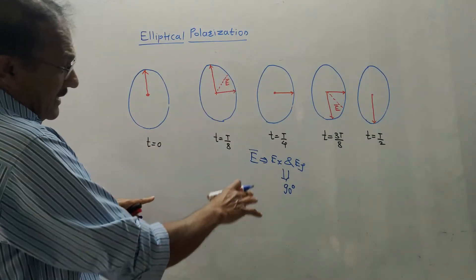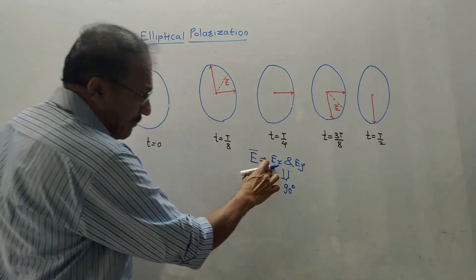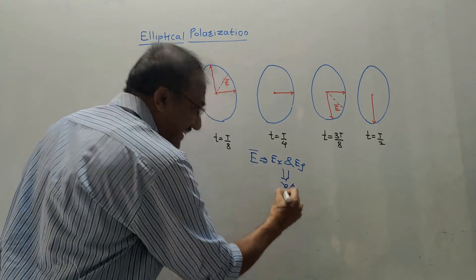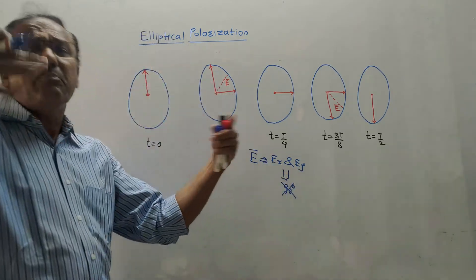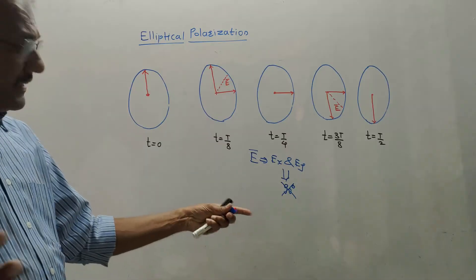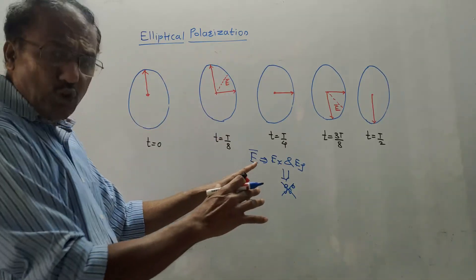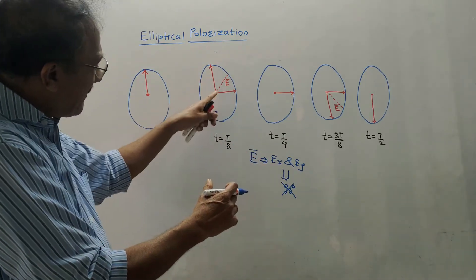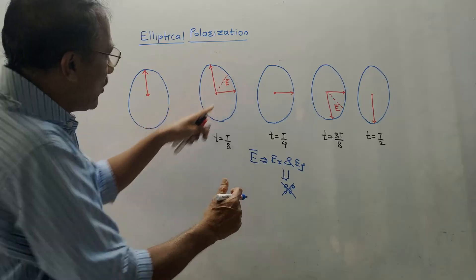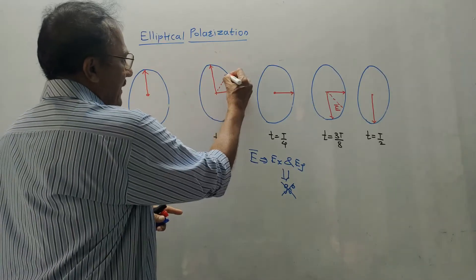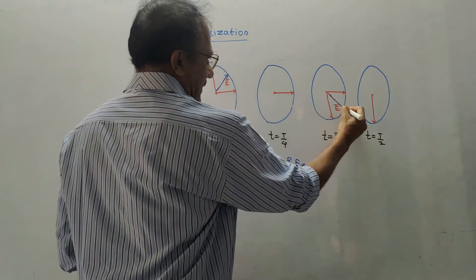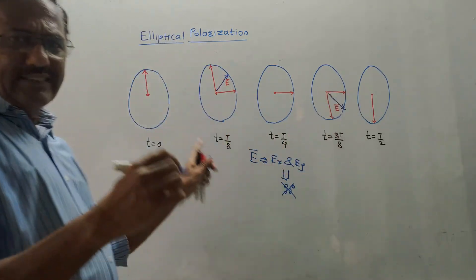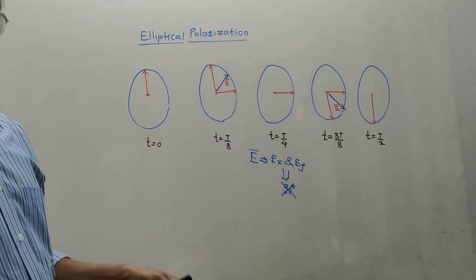Additionally, if the amplitudes are not equal and the phase difference is not exactly 90° but some other value, you will still get elliptical polarization, but the ellipse will be inclined, as shown in such diagrams. This is also known as elliptical polarization.